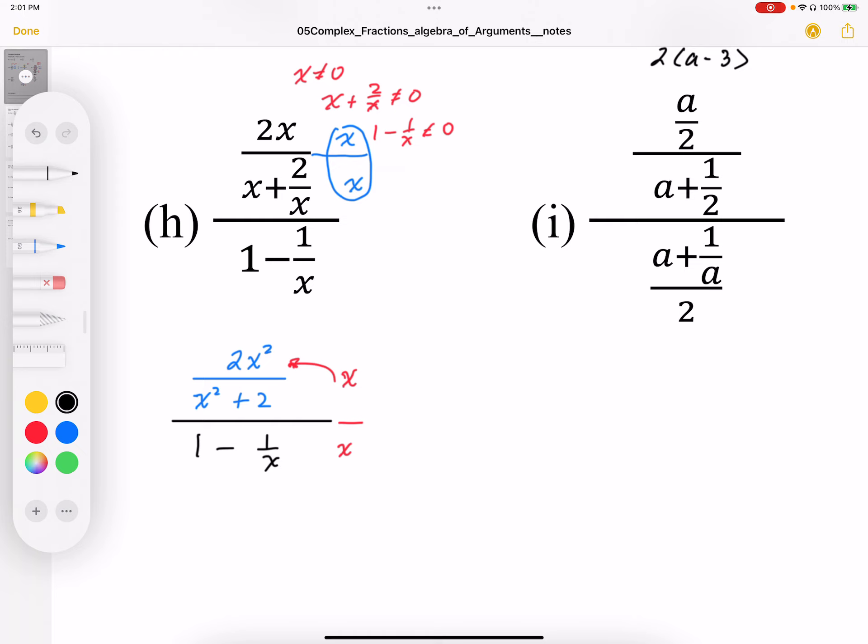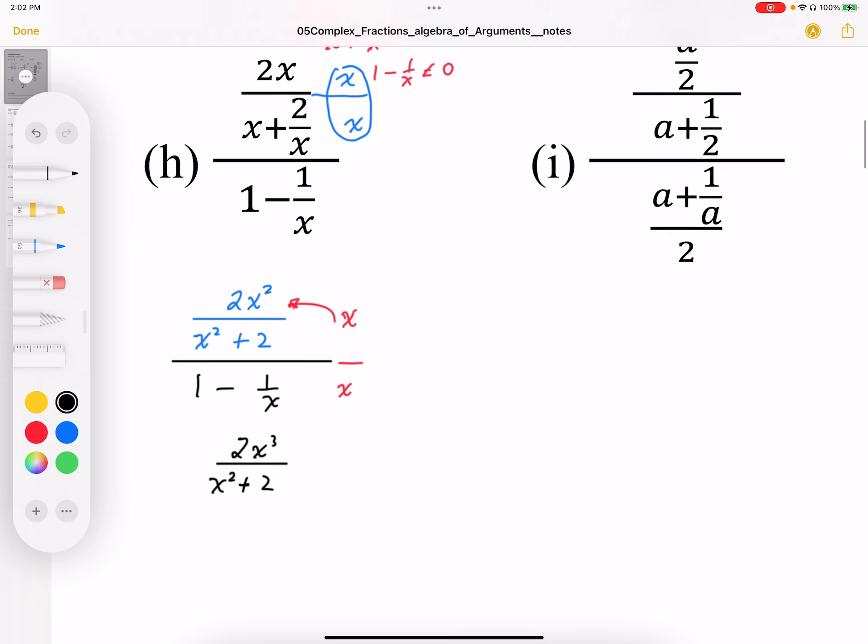I end up with 2x cubed over x squared plus 2. Nothing, none of the x is cancelled here because there's no factor in the denominator. And then in the denominator here, which I'm going to draw a little bit longer because that's my main divisor, I get x squared minus 1.